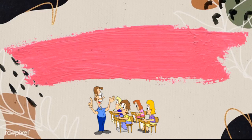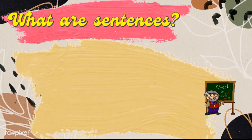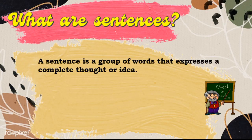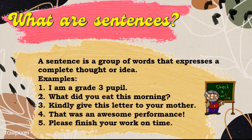Which is all about the different kinds of sentences. Every day, we use sentences in order to express our thoughts and ideas when conversing with others. What are sentences, by the way? A sentence is a group of words that expresses a complete thought or idea. Examples: I am a grade 3 pupil. What did you eat this morning? Kindly give this letter to your mother. That was an awesome performance! Please finish your work on time. All these groups of words express a complete idea or thought, which makes them sentences.